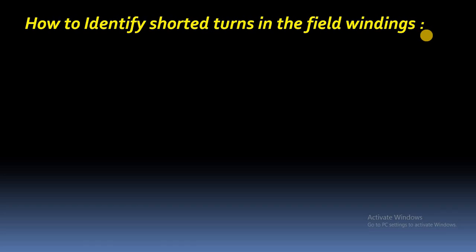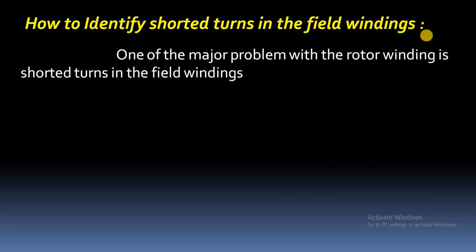These shorted turns are one of the major problems with the rotor winding. They exist because of insulation failure of the rotor winding, the aging of the rotor winding, and because of the thermal stresses of the rotor winding. These are the major reasons for shorted turns in the field winding.